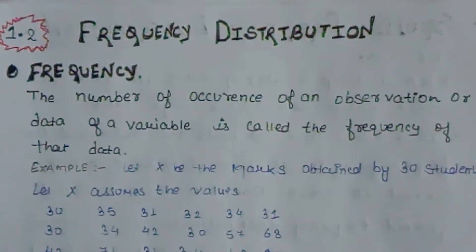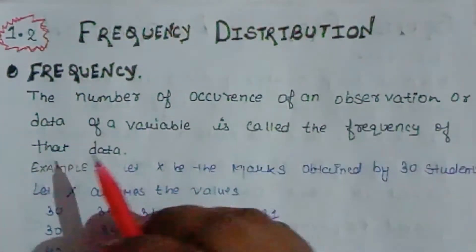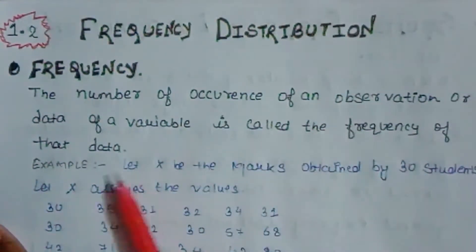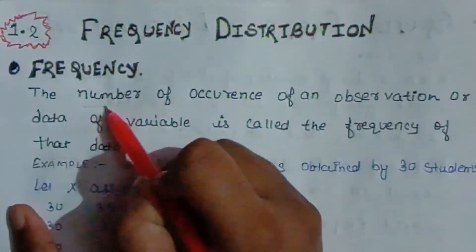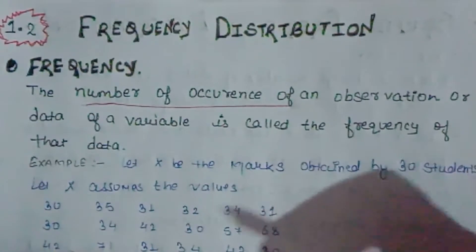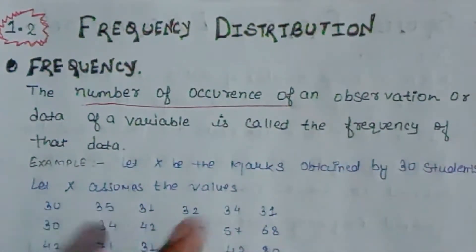Now, what is frequency distribution? But before knowing that, we must first know what is frequency. If you haven't seen my previous videos, go and watch the playlist — videos are already available there. So, frequency: the number of occurrence of an observation or data of a variable is called the frequency of that data. The key point is 'number of occurrence' — how many times one particular observation is repeated, that is the frequency.